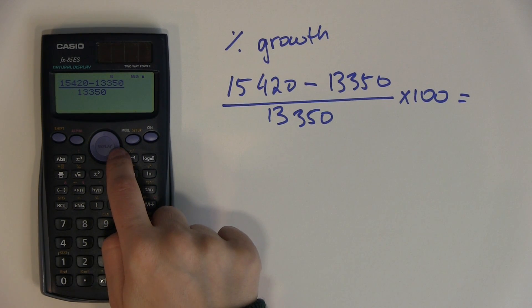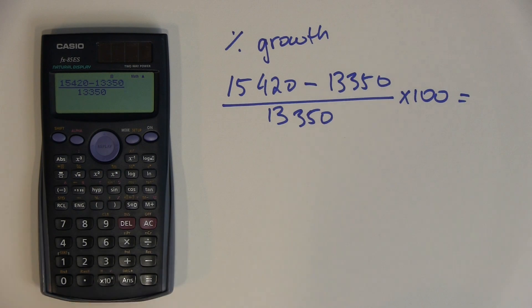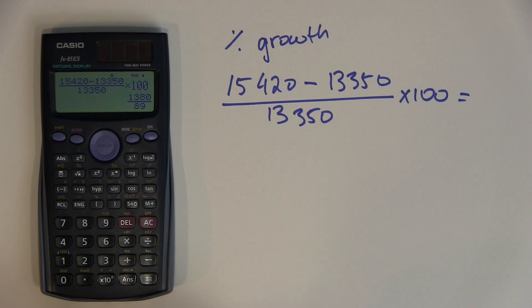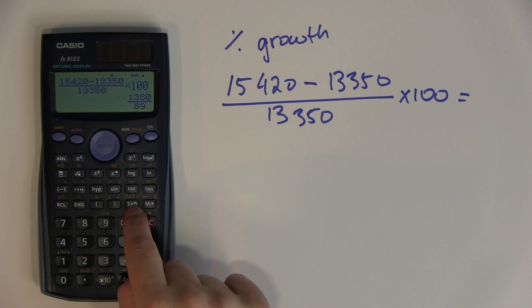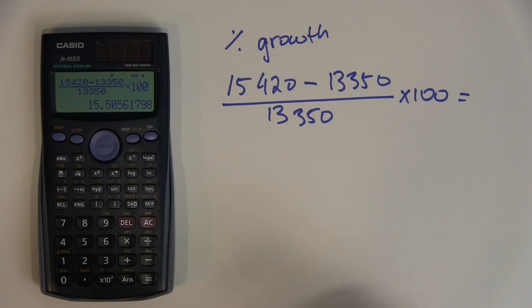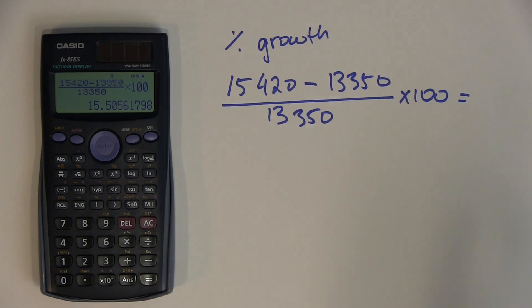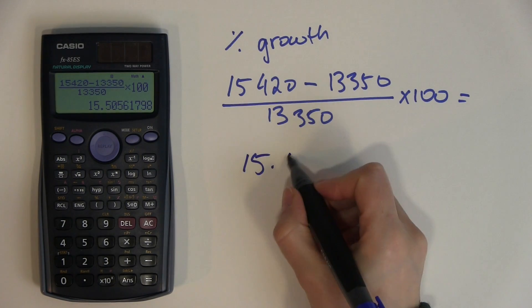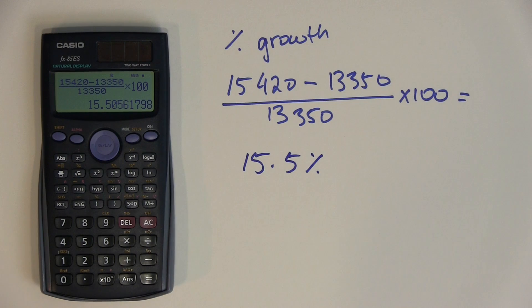I then use the arrow button to come out of the fraction and multiply by 100. After pressing the SD button to get the decimal equivalent, I get the exact percentage growth value — 15.5% to one decimal place.